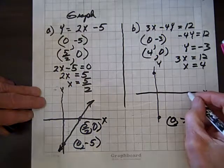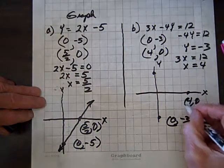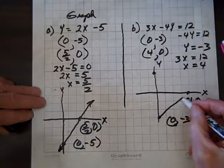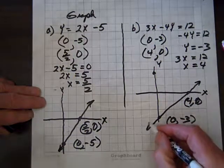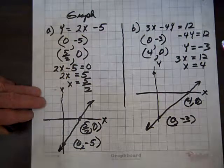And now over here we have 4, 0. And we'll run a line through those two points and we've got it. Graphed a line.